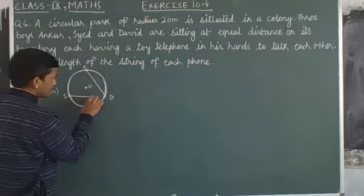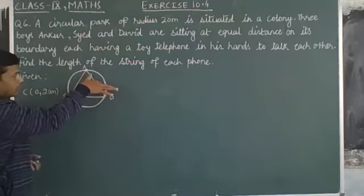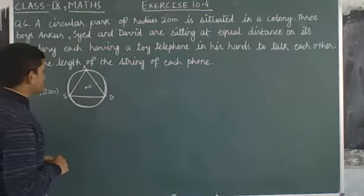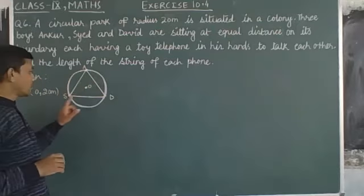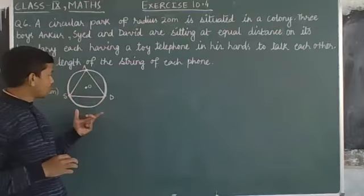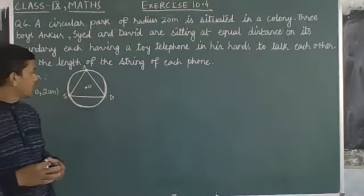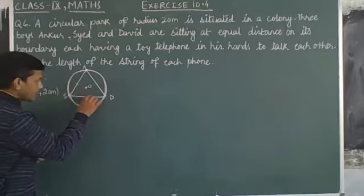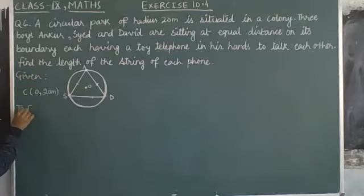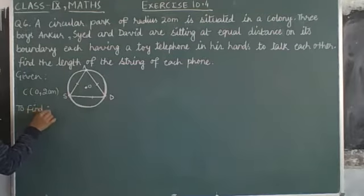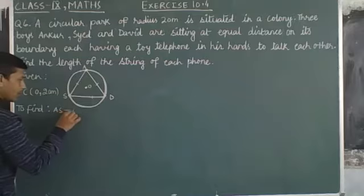Let's join A, S, and D. So these are the lengths of strings of toy telephone used by each one. AS, SD, and DA we have to calculate here. Remember that as Ankur, Syed, and David are seated at equal distances along the boundary of the circular path, this triangle ASD would be an equilateral triangle in which AS, SD, and AD are equal to each other.